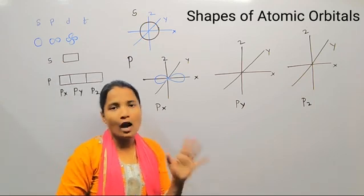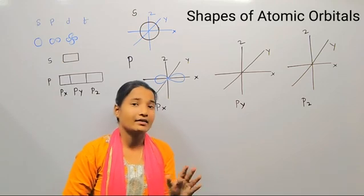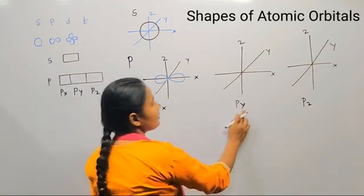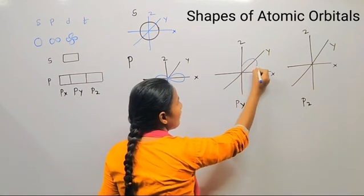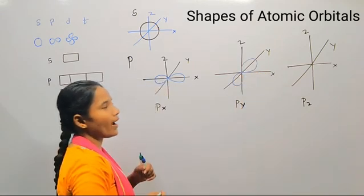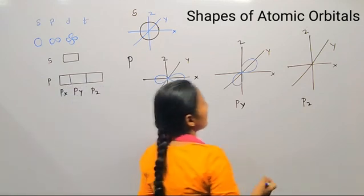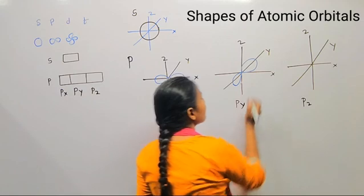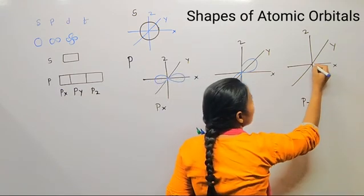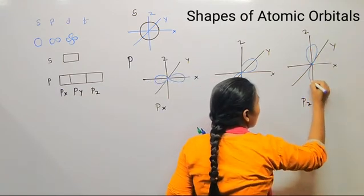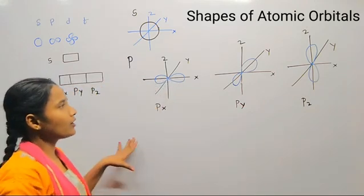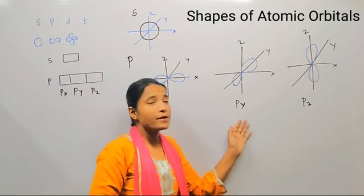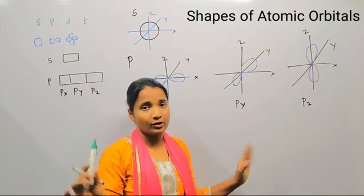For px, draw the dumbbell shape on the x-axis. Similarly for py, draw the dumbbell shape on the y-axis. And for pz, draw the dumbbell shape along the z-axis. These are the shapes of the px, py, and pz orbitals. The three-dimensional structure is quite beautiful.